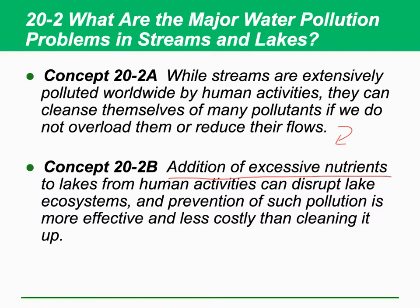The addition of excessive nutrients to a lake from human activities can disrupt the lake ecosystem. Prevention of such pollution is more effective and less costly than cleaning it up. When water in a lake or river is polluted, it is much more difficult to clean up. But if we can somehow prevent that kind of water pollution, that is more economical — we have to spend less money to prevent water pollution than to clean up or restore water quality.